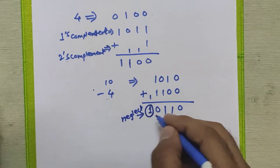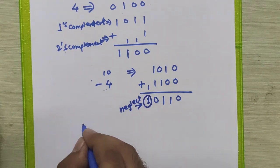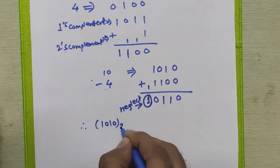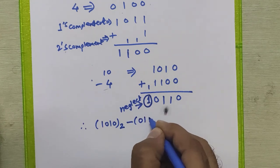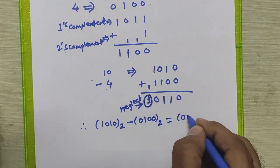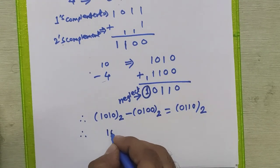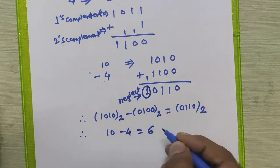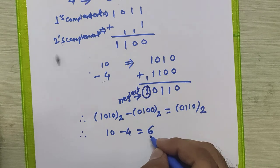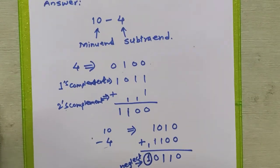We neglect this carry, so the answer is 0 1 1 0. Therefore, 1 0 1 0 in binary minus 0 1 0 0 in binary equals 0 1 1 0 in binary. In other words, ten minus four equals six. If you convert 0 1 1 0 from binary to decimal, you get six.